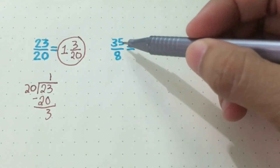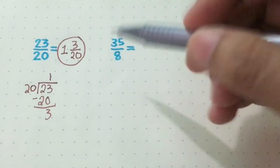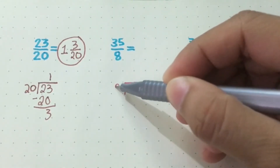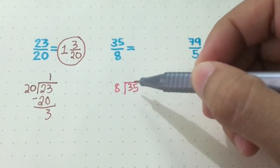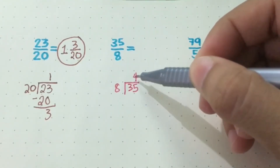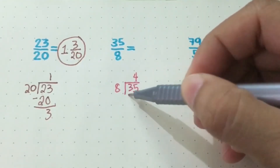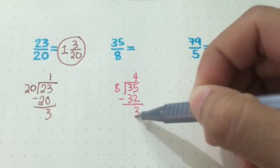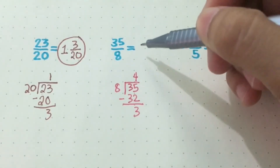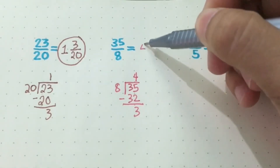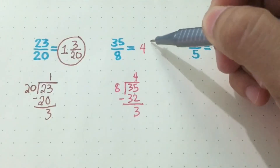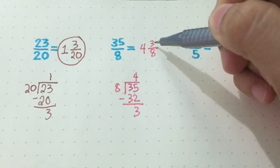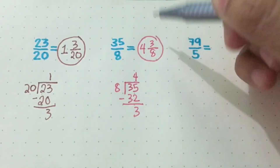Next, let's try this one: 35 over 8. So that means we need to divide 35 by 8. 35 divided by 8, we'll get 4. 4 times 8 is 32. Subtract — 35 minus 32 is 3. The whole number is the answer, which is 4. The remainder is your numerator, which is 3. And the denominator is 8. So we have 4 and 3 eighths.